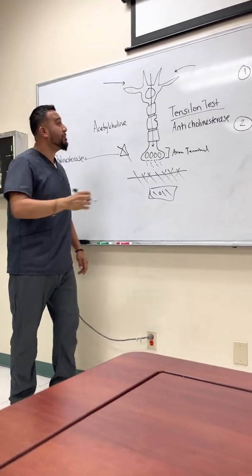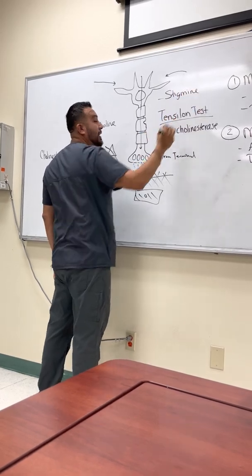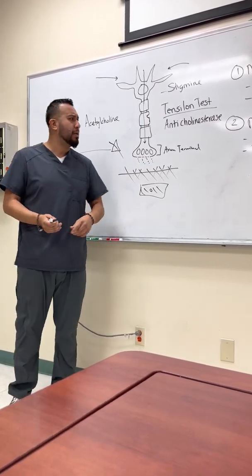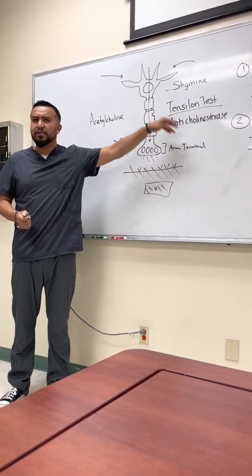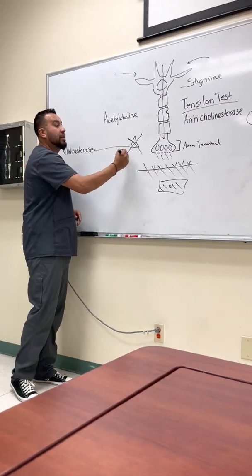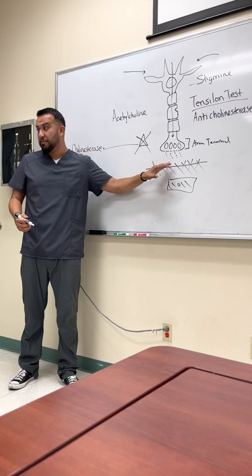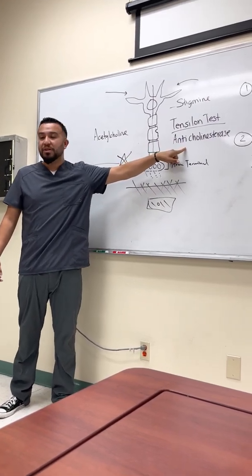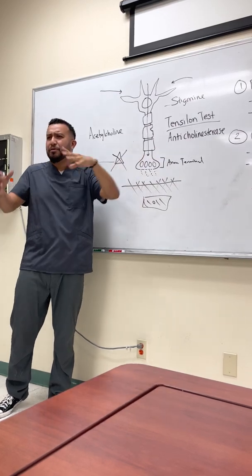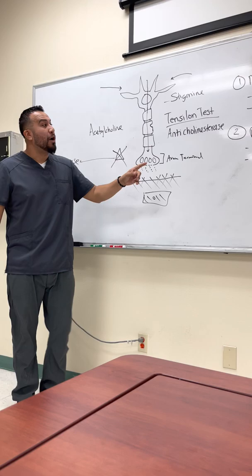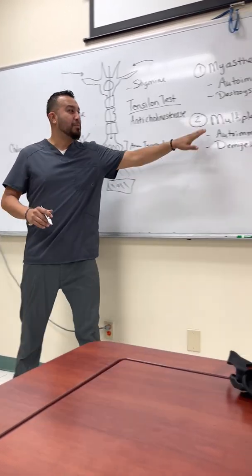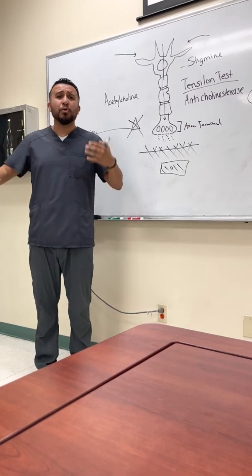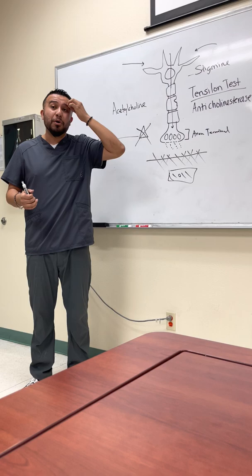If the drug name ends in '-stigmine,' it's an anti-cholinesterase. So when a patient comes in with weakness during movement, you give them a small injection of anti-cholinesterase — one of the stigmines. This blocks the reabsorption of acetylcholine and leaves it available to trickle down to the receptor site, improving movement. The improvement is short-term, about five minutes, but it confirms the patient has myasthenia gravis and not multiple sclerosis.